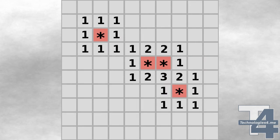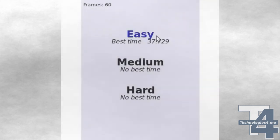Every tile on the grid begins in an initial hidden state until the player begins uncovering tiles by clicking on them.